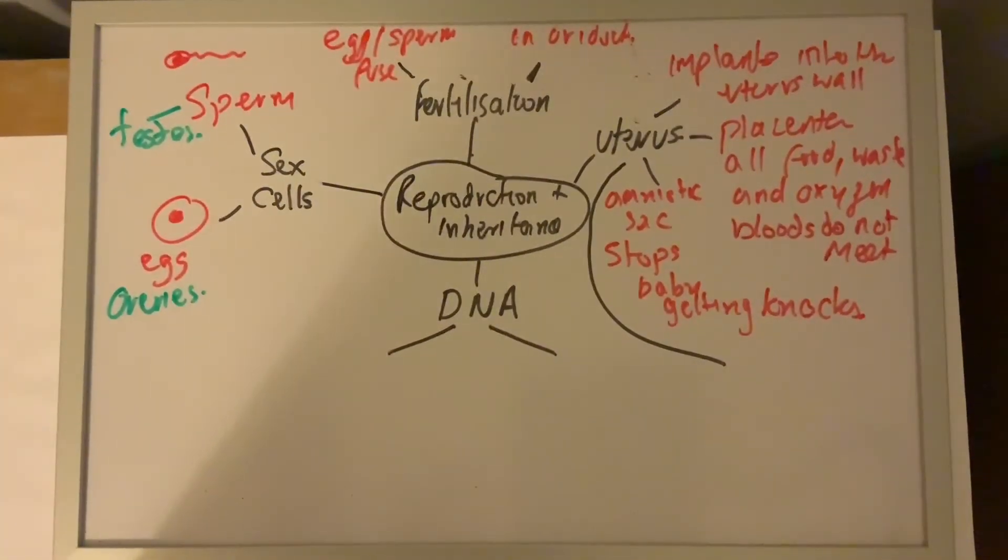As well as useful substances like oxygen, food and waste products like carbon dioxide and other wastes from the baby being passed across the placenta, you can also get unwelcome materials, things like drugs, alcohol, nicotine, things that you don't want. These are things that will damage the baby and are best avoided.